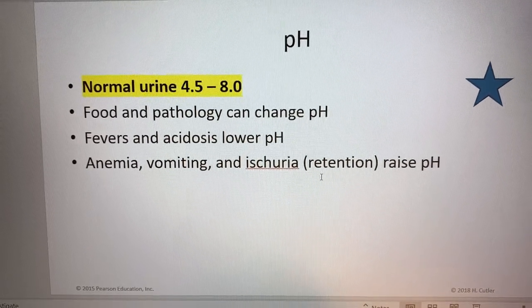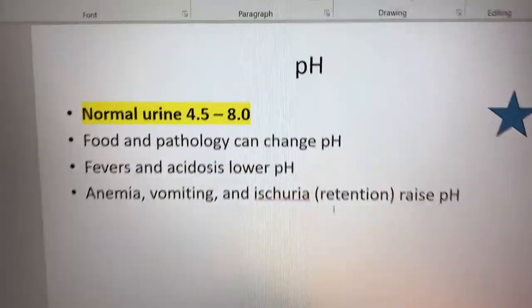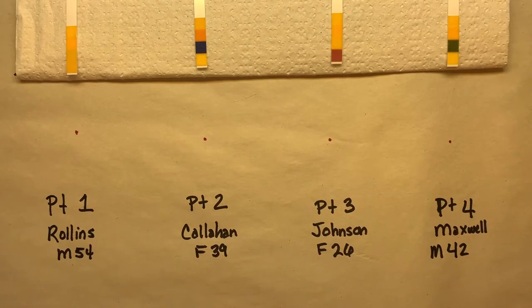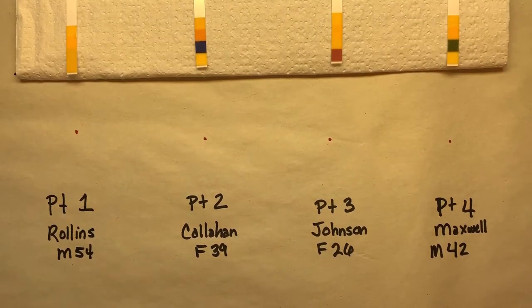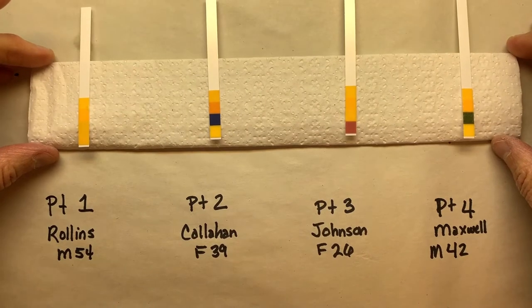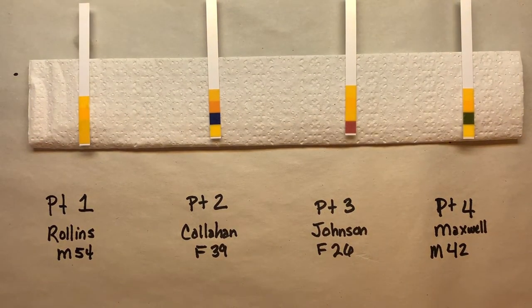So let's look at the pH strips. Now I've already done the pH for these, and I'll set the cups back up, but let's look at these colors and give them some numbers.